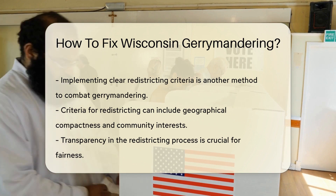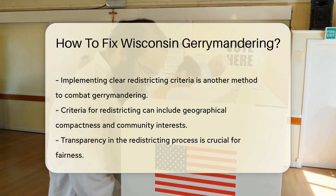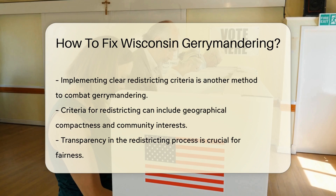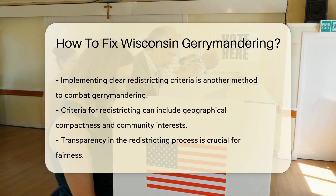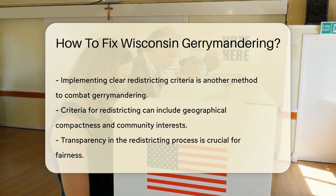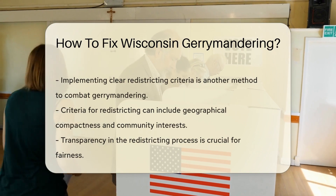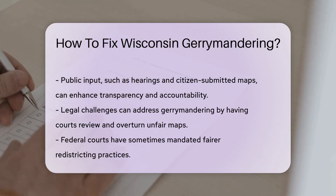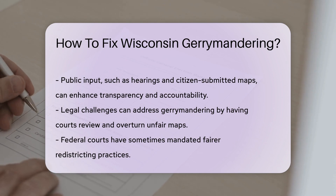Ensuring transparency in the redistricting process is also crucial. Public input can play a significant role in the redistricting process. Holding public hearings and allowing citizens to submit their own maps can increase transparency and accountability. This ensures that the voices of the electorate are heard and considered.